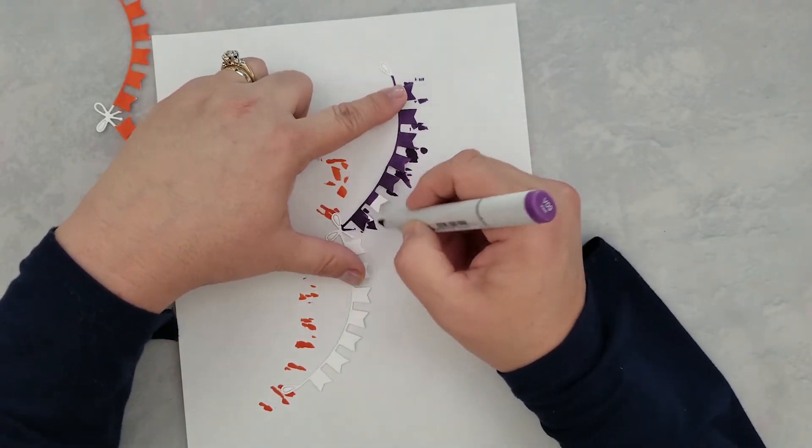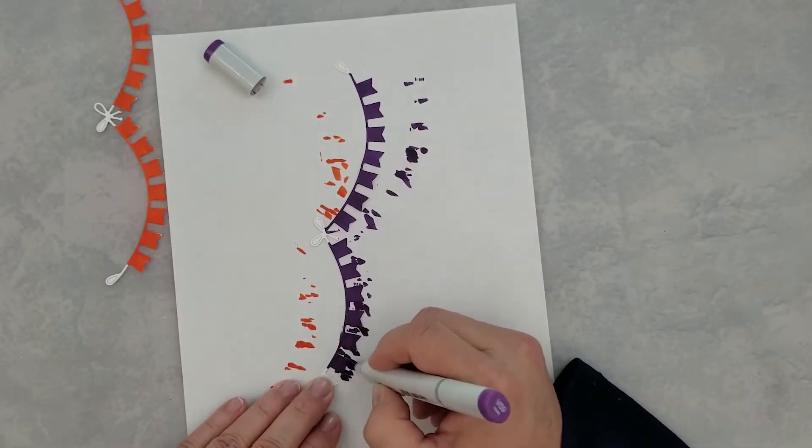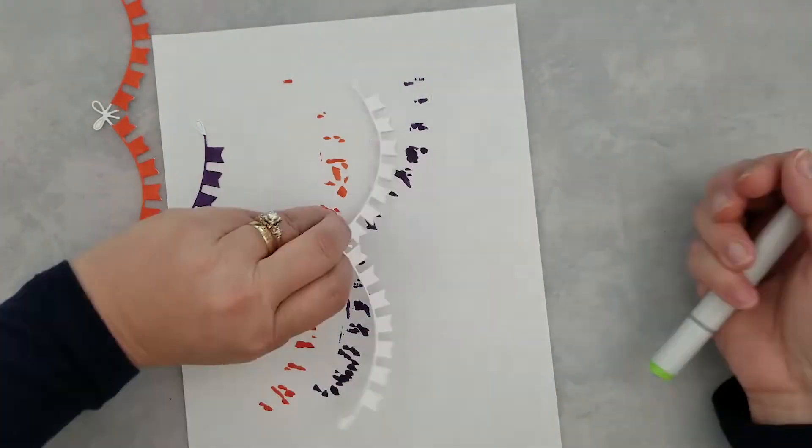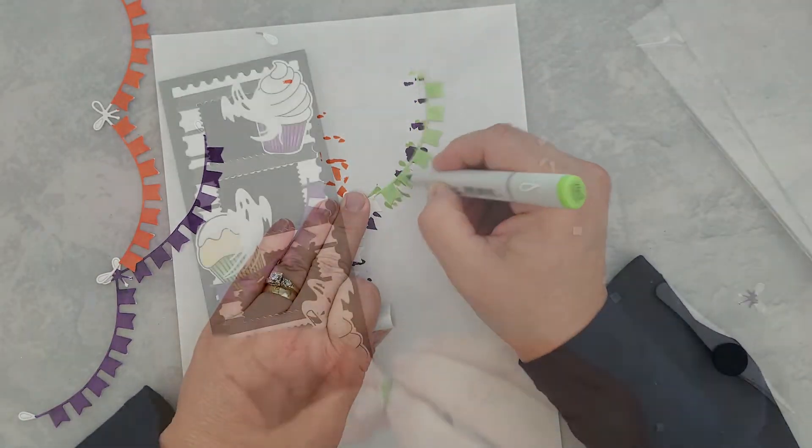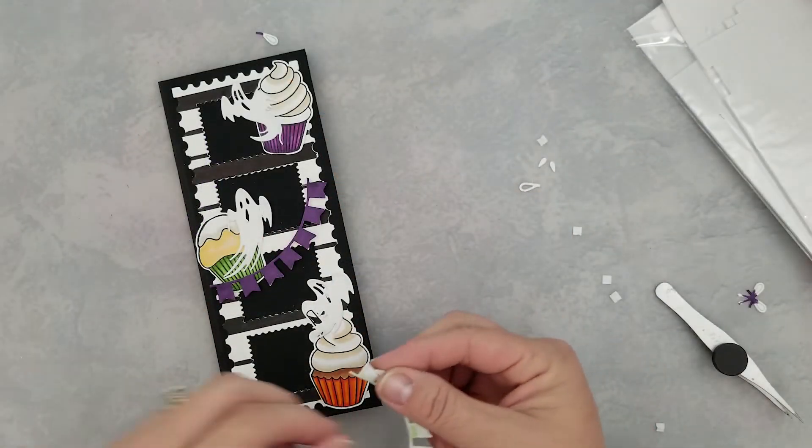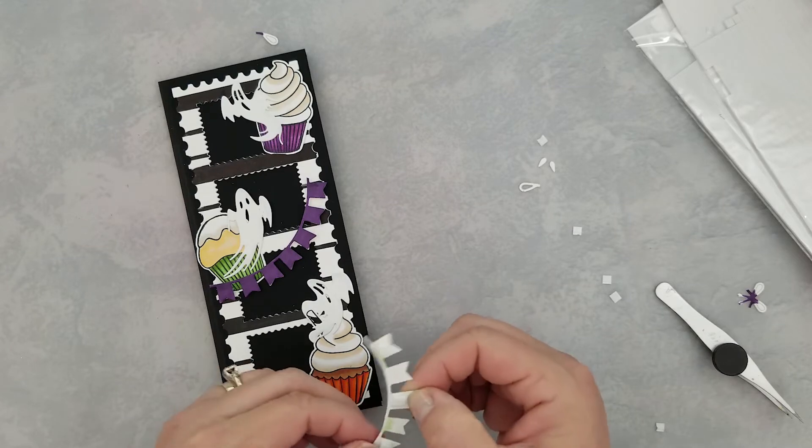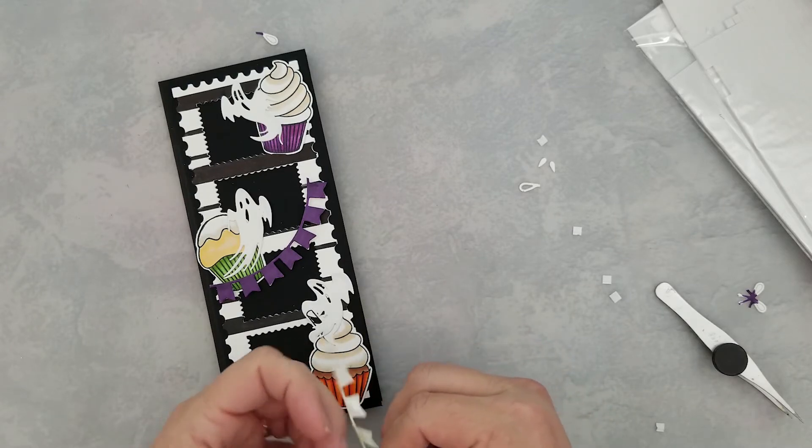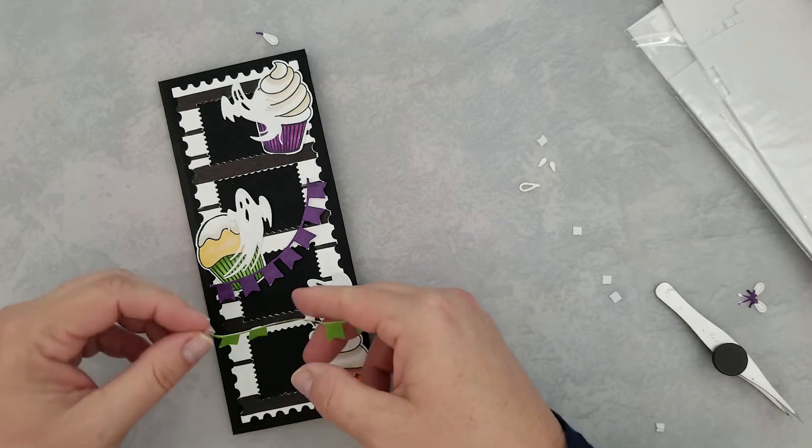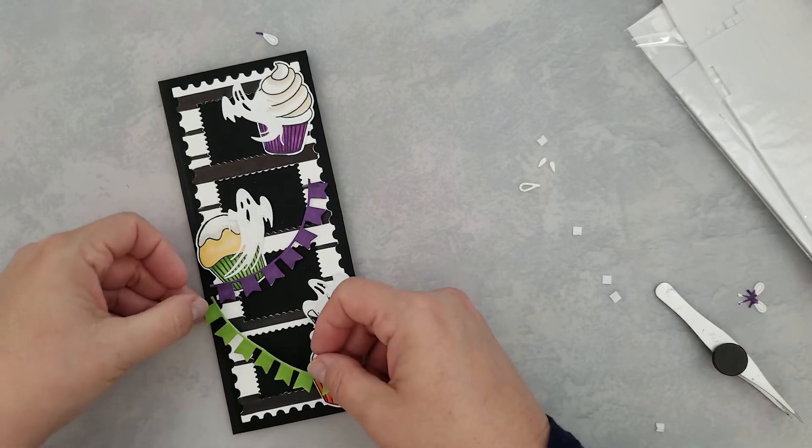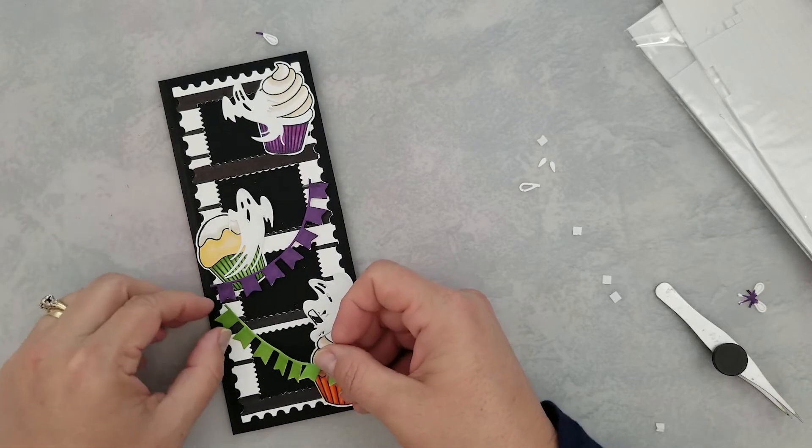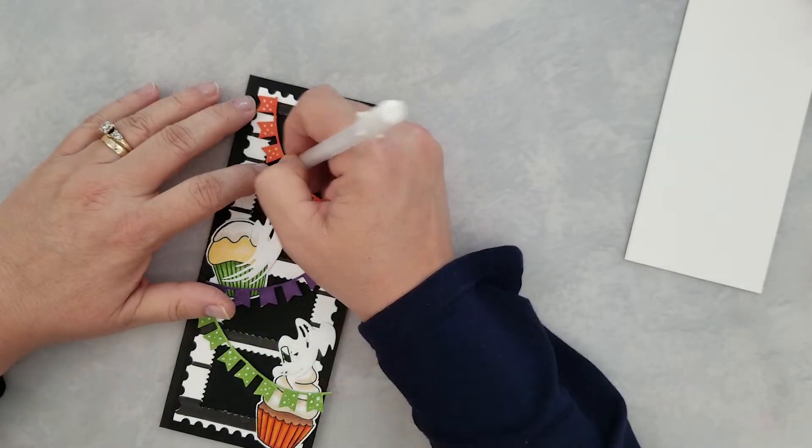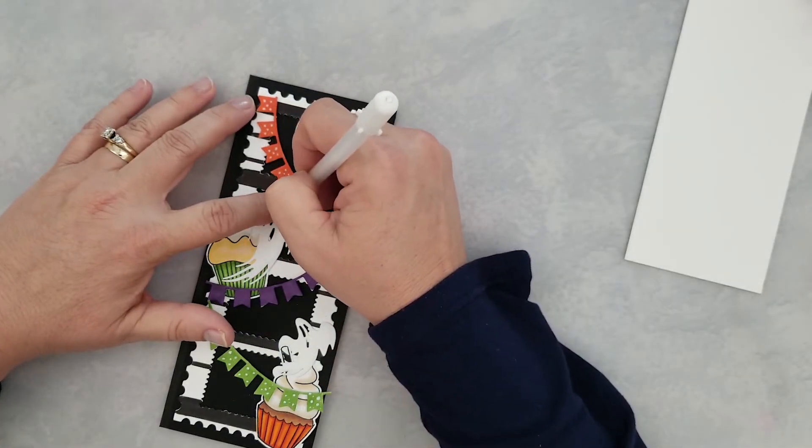I then decided to go ahead and color the bunting with the same markers that I used for the wrappers on the cupcakes. We're going to play around with the placement of the images. Once I'm happy with everything, I use liquid adhesive to the back of the ghost and the cupcakes to add those to the card, and some little square foam adhesives to the back of the bunting to add that as well. I do come in with a white gel pen and add a little detail to that bunting.